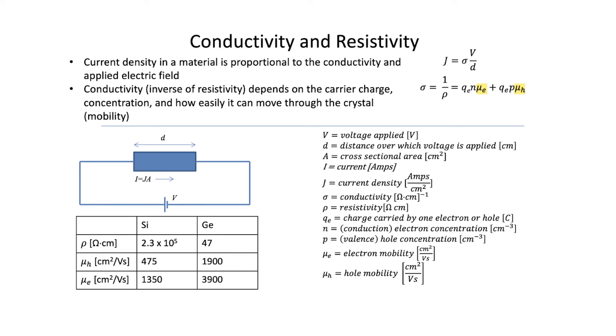Because we have holes in the valence band conducting electricity too. In a normal piece of silicon at thermal equilibrium, the number of electrons in the conduction band is equal to the number of holes in the valence band. It's just that it's easier for the electrons to move than it is for the holes.